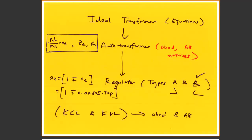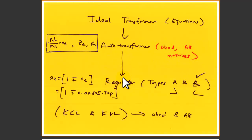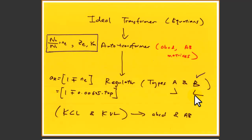As you remember, the last lecture on Friday we briefly went through the ideal transformer and auto transformer that talked about ABCD and capital AB matrices. Then we went into regulator type A and B. Type A is what we refer to as the reverse L model, and type B is the L model. The L model is basically the common model used in many utilities.